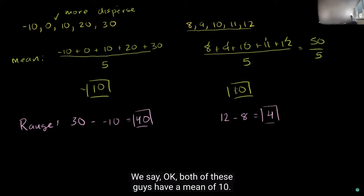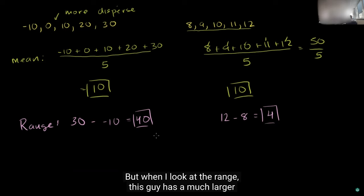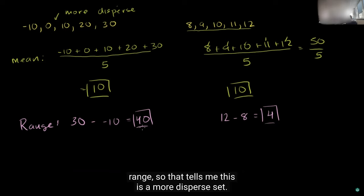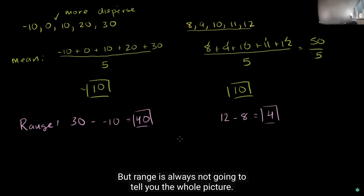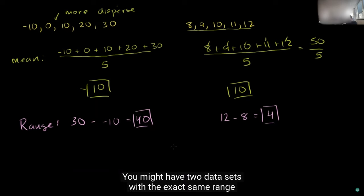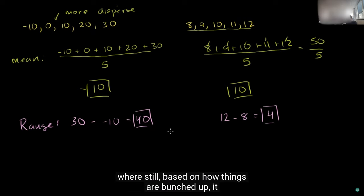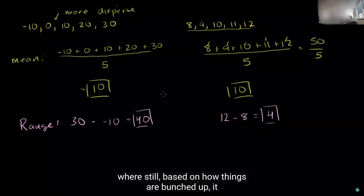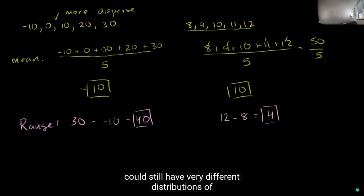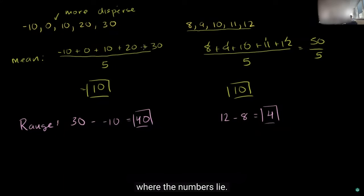So here, range is a pretty good measure of dispersion. Both datasets have a mean of 10, but this one has a much larger range of 40, telling us it's more dispersed. However, range doesn't always tell you the whole picture — you might have two data sets with the exact same range where the numbers are still bunched up very differently, giving very different distributions.